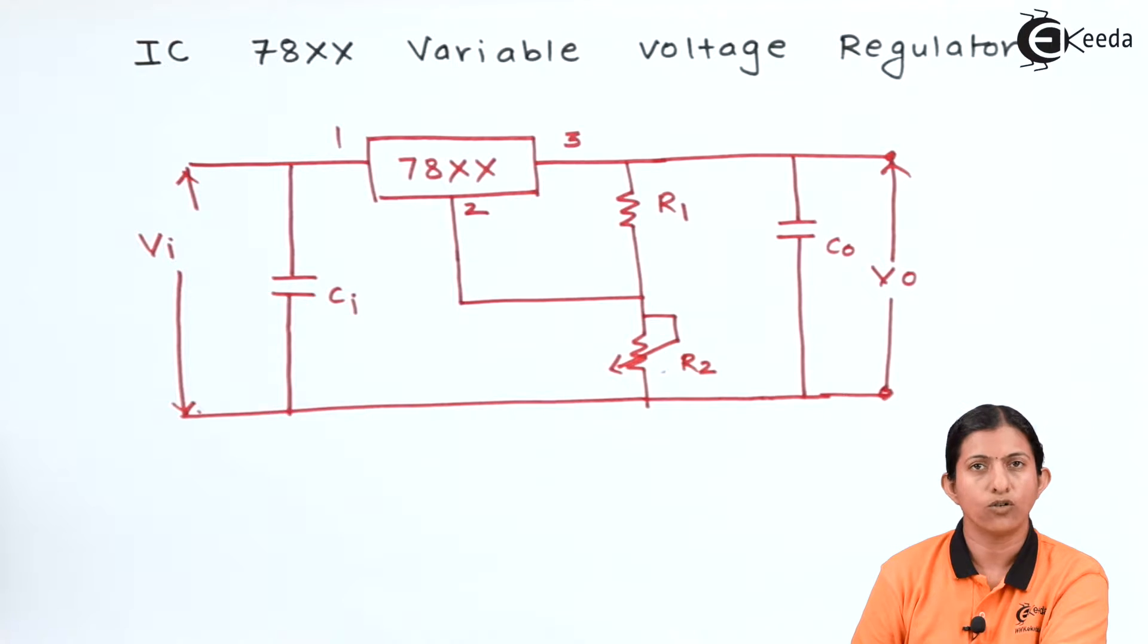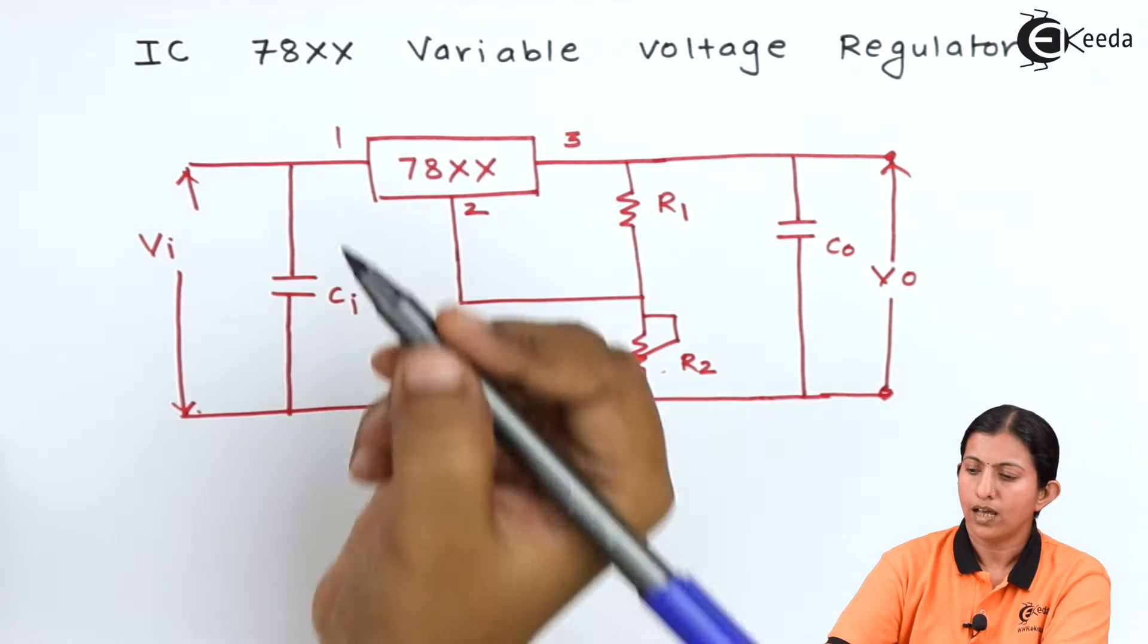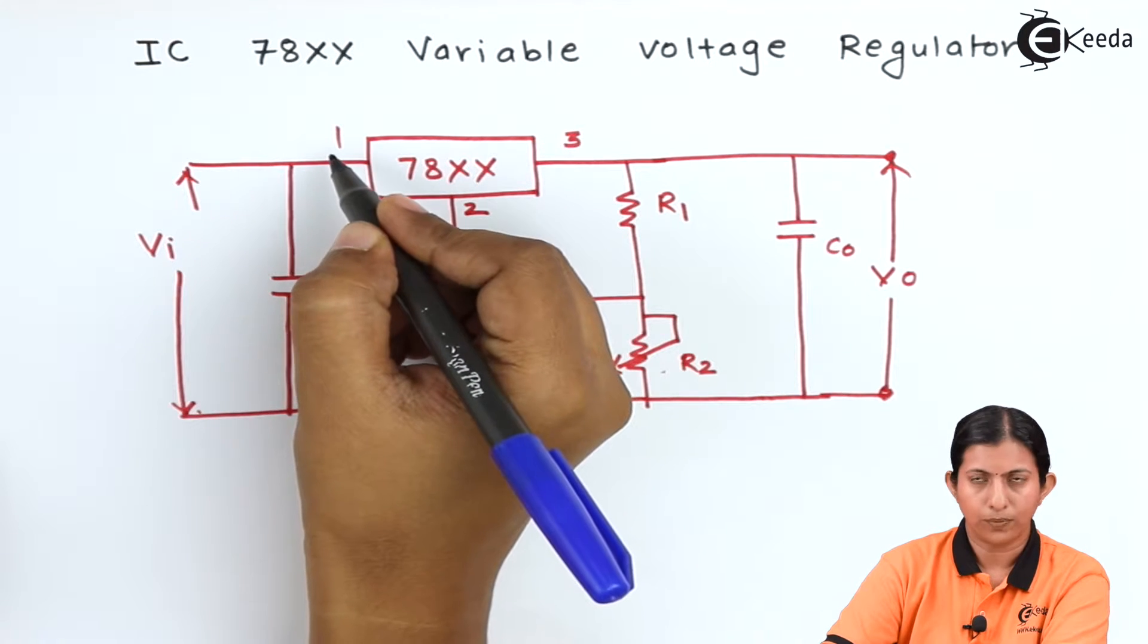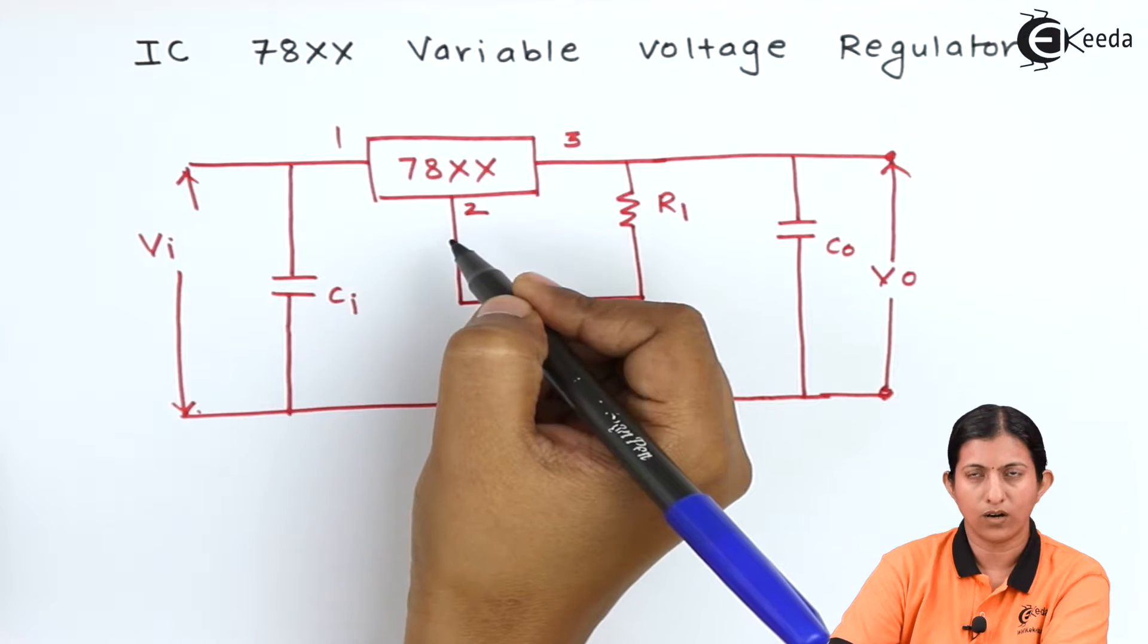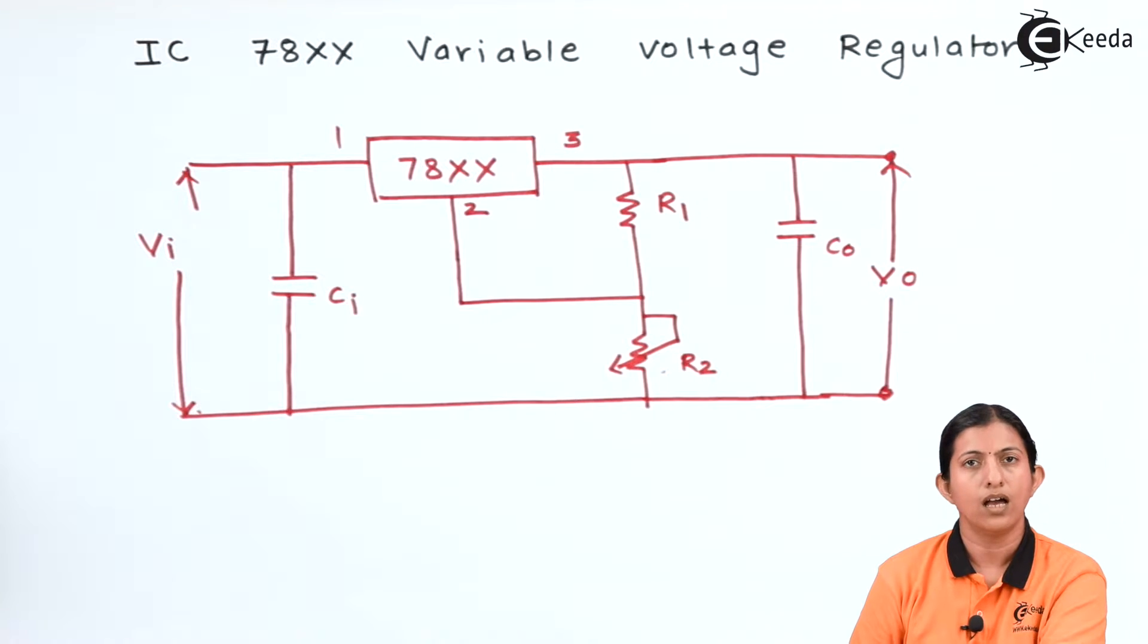Whenever I am saying 7805, it indicates it is a 5 volt supply. Pin number 1 is input pin, pin number 2 is ground, and pin number 3 is the output pin.